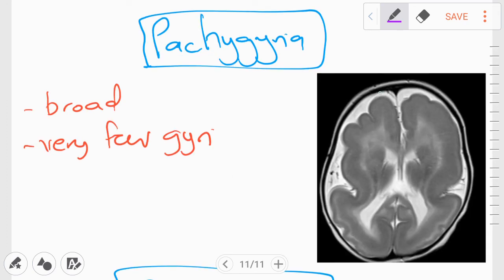The next disorder in our list is called pachygyria. What we mean by that is the gyri of the brain are broad and are very few. So this is a gyrus. This is a gyrus. As you can see, it's quite broad and there are quite few.